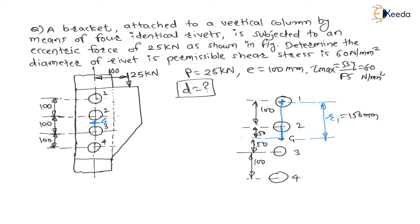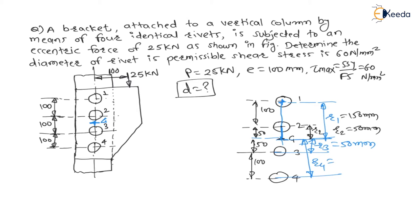Similarly, R2 — the distance between centroid and rivet 2 — is equal to 50 mm. R3, the distance of rivet 3 from centroid, is also equal to 50 mm. And R4, the distance of centroid from rivet 4, is equal to 150 mm. Therefore: R1 = R4 = 150 mm, and R2 = R3 = 50 mm.